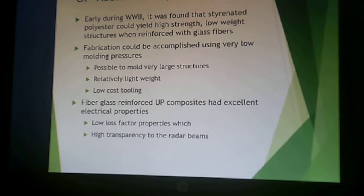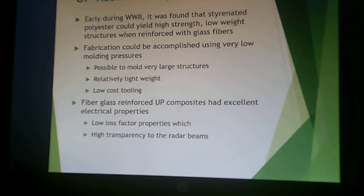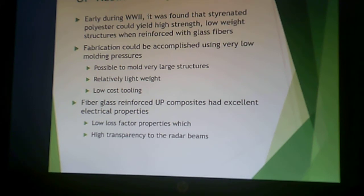Along came World War II, and like a lot of other things that have to do with polymeric materials, this is where unsaturated polyester resins really came into their own. The styrenated polyester gave high yield strength and low weight structures when reinforced with glass fiber, making it possible to mold very large structures that were relatively lightweight using low-cost tooling — things that could be produced very quickly for the war effort. Also, it had a low loss factor. The big technological breakthrough in modern warfare in World War II was radar, and a low loss factor meant the unsaturated polyester composite was transparent to radar beams. So if something was made from an unsaturated polyester, rather than bouncing off a metal surface back to a radar detector, they could literally fly under the radar if they were made from unsaturated polyester composites.